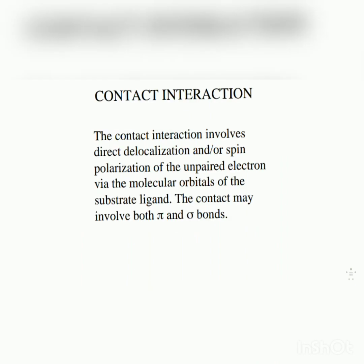The contact interaction involves direct delocalization or spin polarization of the unpaired electrons via the molecular orbitals of the substrate ligand. The contact may involve both pi and sigma bonds. We have a contact interaction involving direct delocalization. The spin polarization involves different unpaired electrons.